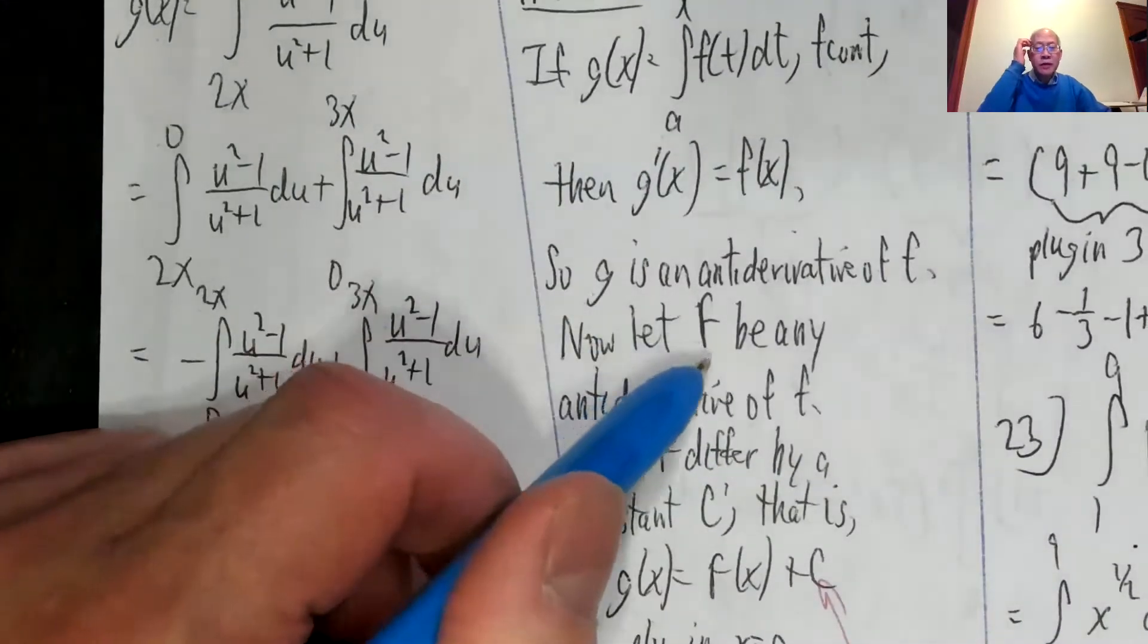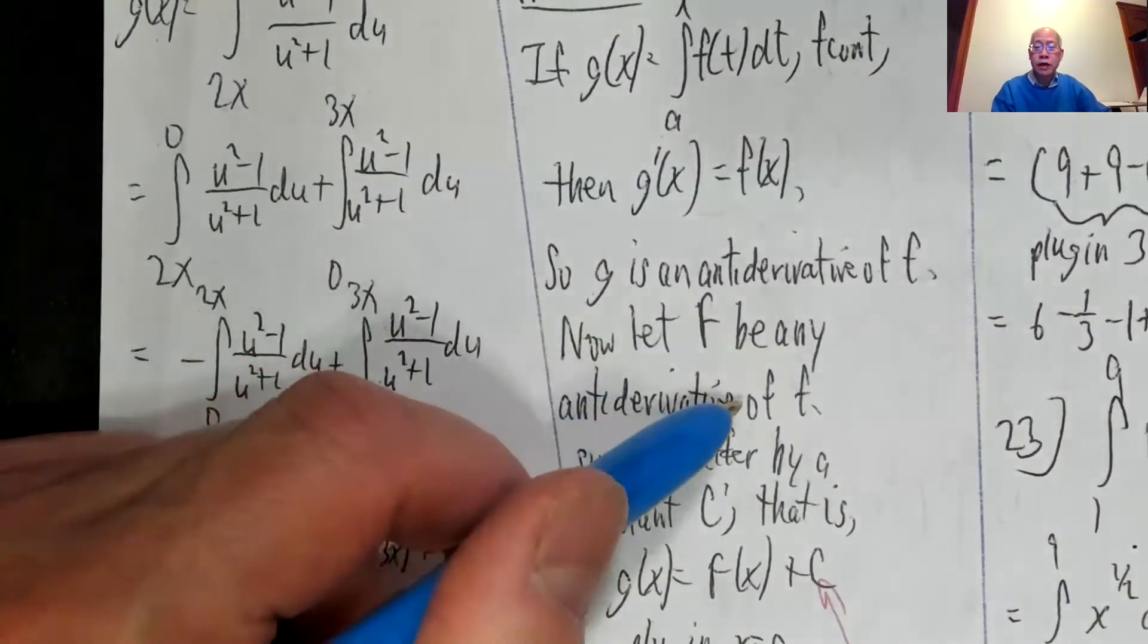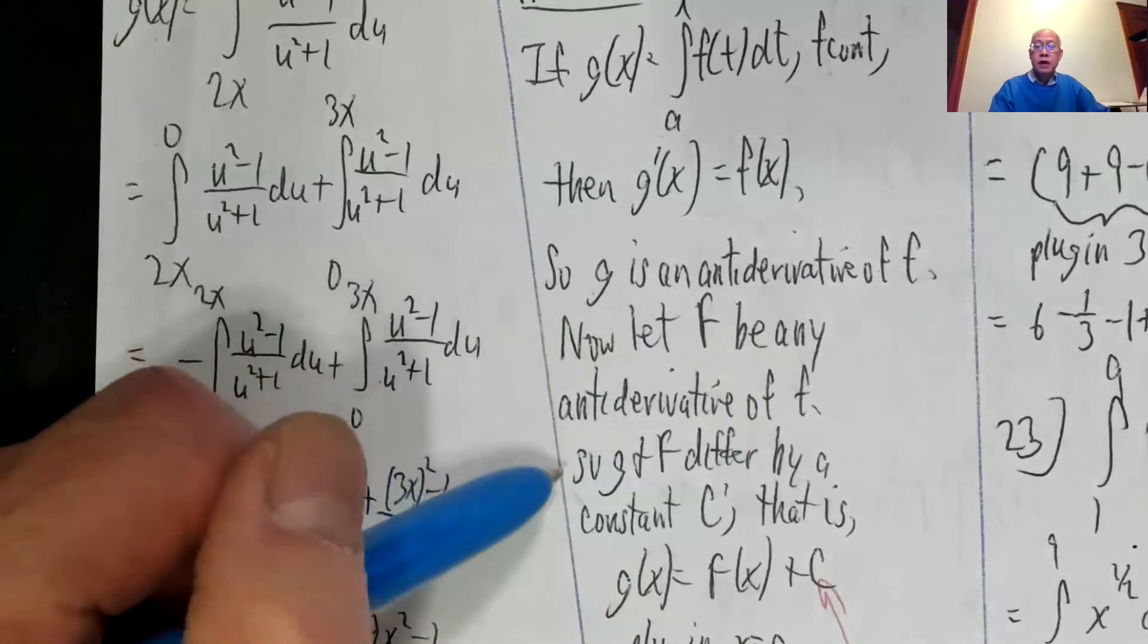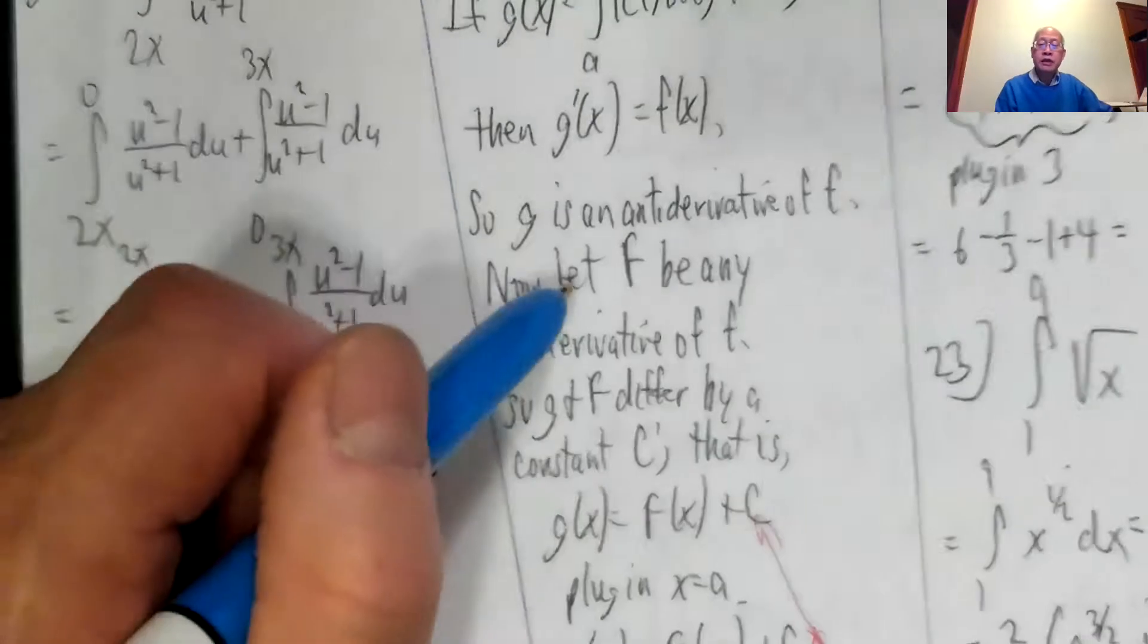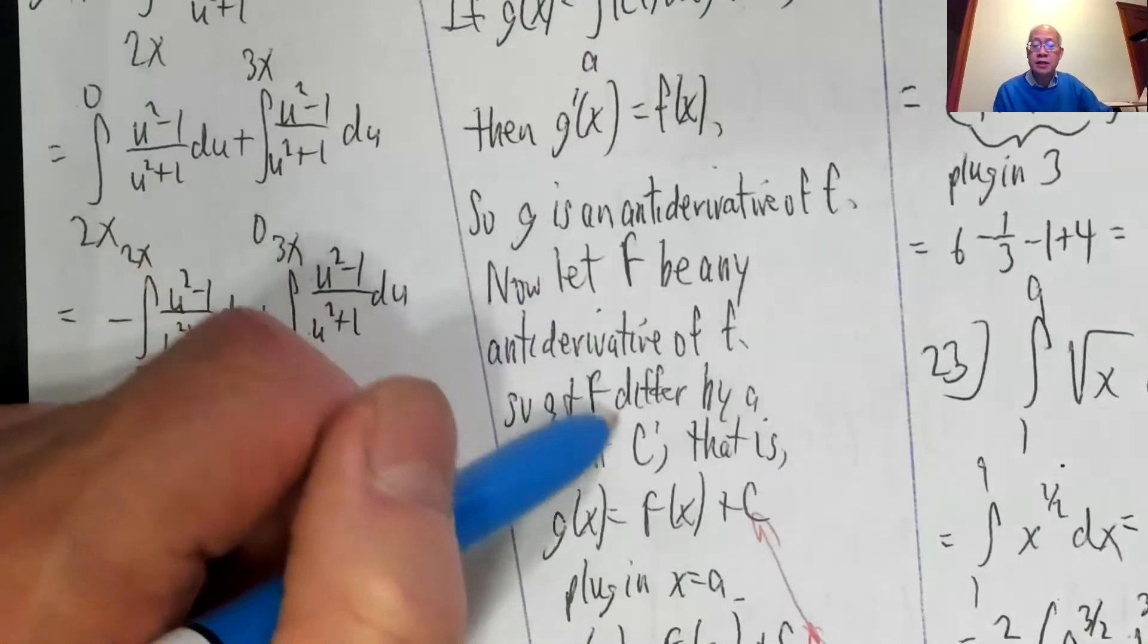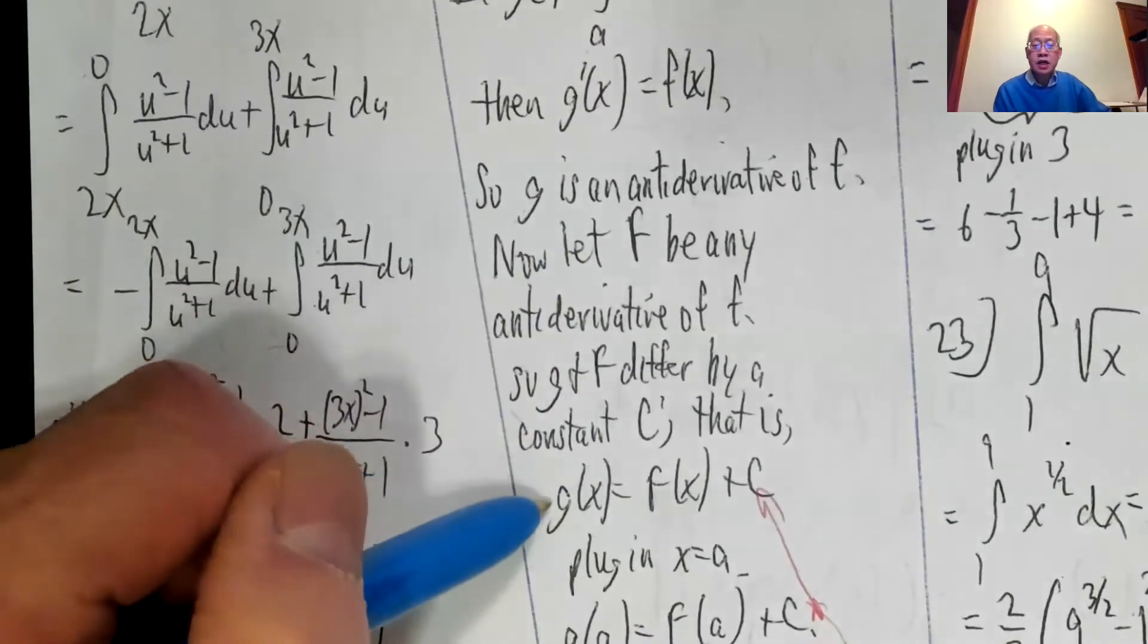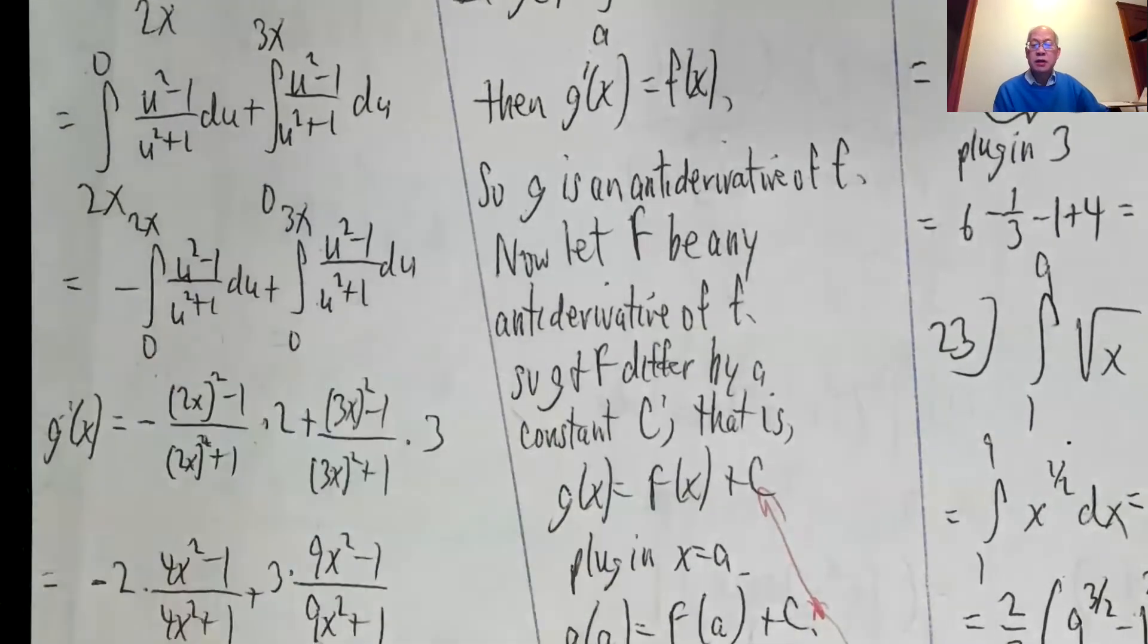Now let capital F be any antiderivative of little f. So that means g and capital F differ by a constant. If I have one or more antiderivatives of a function that differ by a constant c, that is g of x is equal to capital F of x plus c.